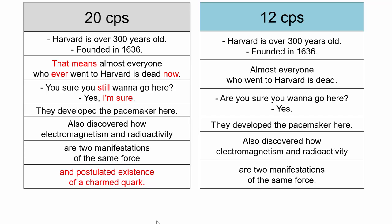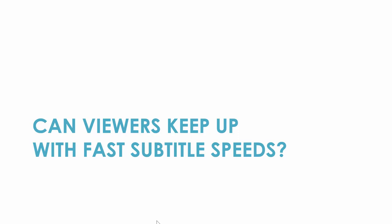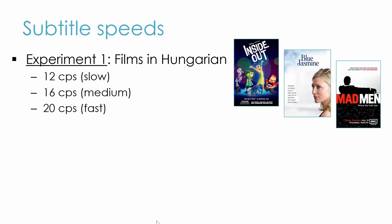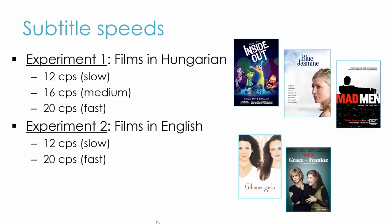As we said before, condensing text from the dialogue in subtitles is often necessary to provide people with a comfortable viewing experience, allowing them to read the subtitles and enjoy the film at the same time. However, given that many productions now are fast-paced and dialogue-heavy and that subtitle speeds have increased in recent years, we wondered if people can follow fast subtitles up to 20 characters per second, which are more and more often found in films and shows. We conducted two experiments, one with clips with the soundtrack in Hungarian and the other in English.